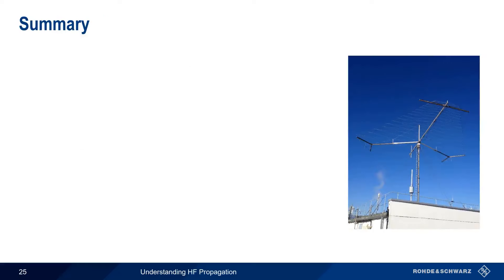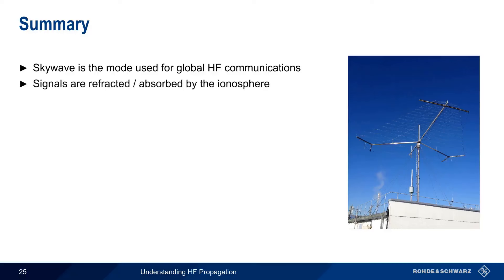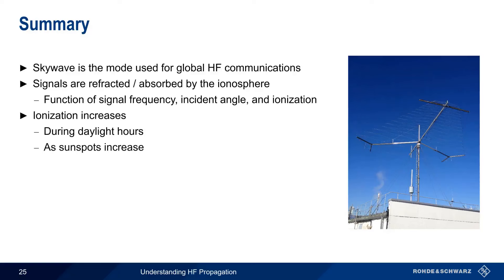Let's summarize what we've learned. Global HF communications are usually based on skywave propagation rather than on direct line of sight or ground wave propagation. In skywave, signals are refracted by the ionosphere, although the effect of some layers is more to absorb signals than to refract them. Whether or not a signal is refracted or absorbed by the ionosphere is largely a function of three things: the frequency of the signal, the incident angle, and the amount of ionization in the upper atmosphere. Generally speaking, this ionization increases during daylight hours while the sun is illuminating that side of the Earth. On a longer time scale, ionization also increases as the number of sunspots increases, the number of sunspots following a roughly 11-year solar cycle.